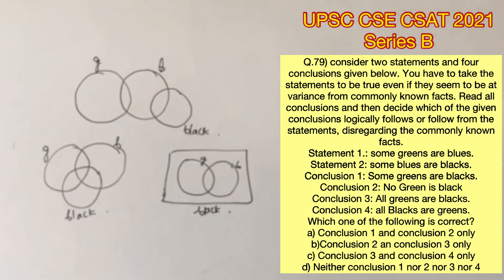Conclusion 1 says some greens are blacks. Now this is not true in all the cases. The first case itself negates this statement. Therefore, conclusion 1 is wrong.